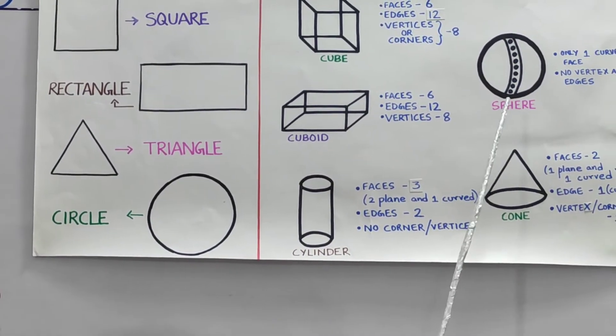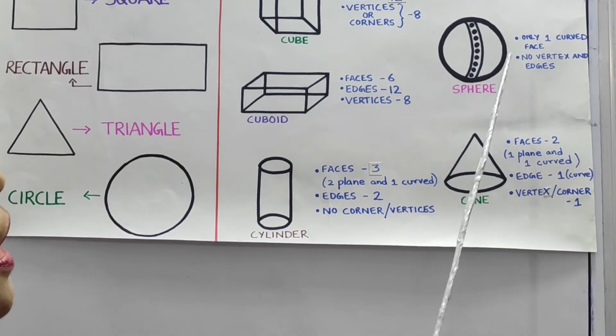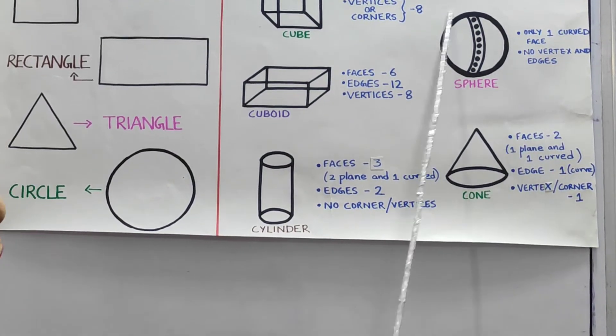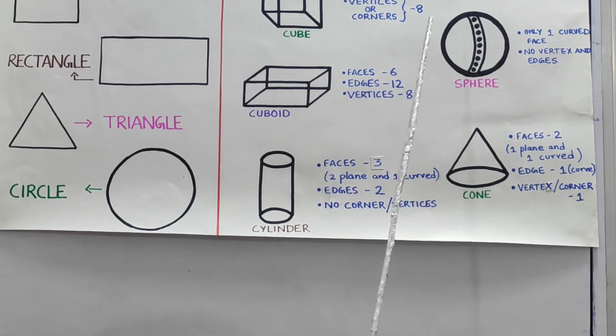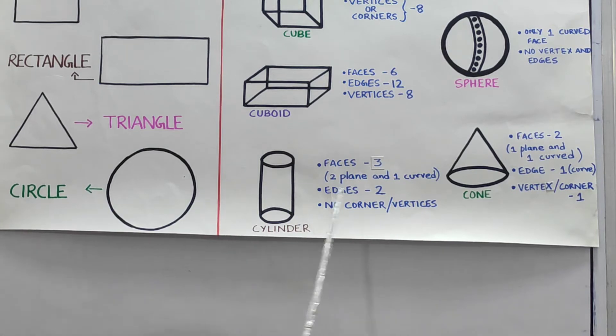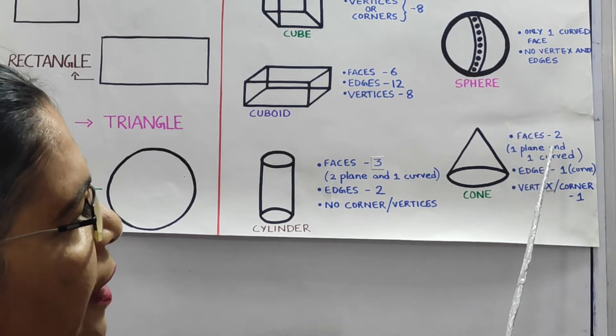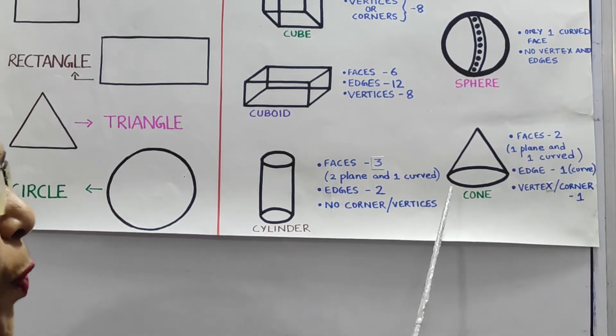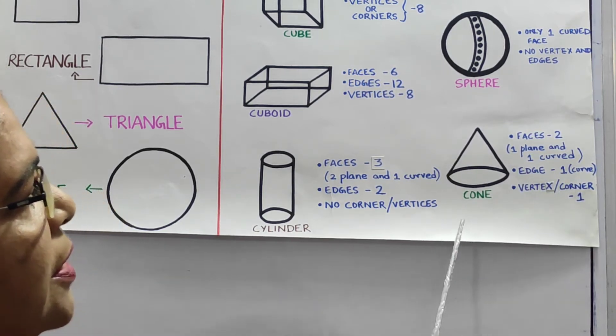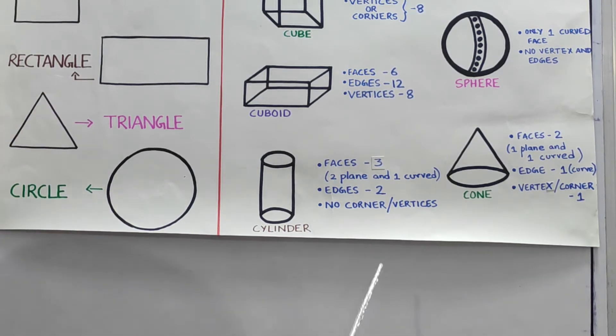Moving on to the next figure is a sphere. A sphere has only one curved face. It has no vertex or edges. The last one is a cone. A cone has two faces, one plane and a curved one. It has one curved edge and one vertex or corner.